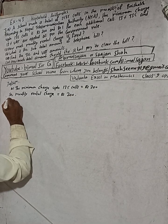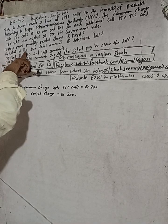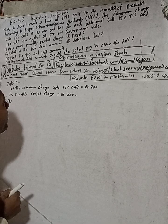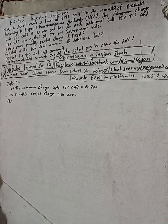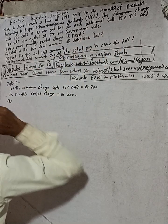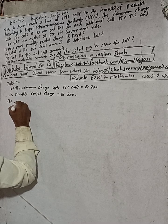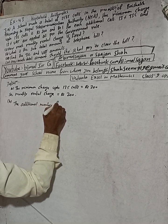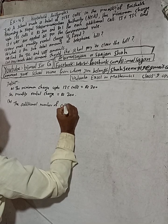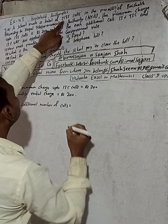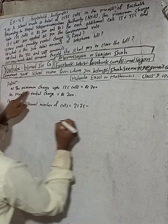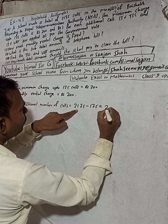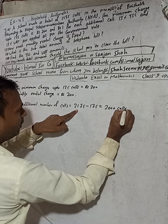Question number two: what is the sub-total amount of the telephone bill? To find the sub-total amount of the bill, we first find the additional number of calls. The additional number of calls means the total is 2175, and we subtract the minimum 175 calls. This gives 2000 additional calls.